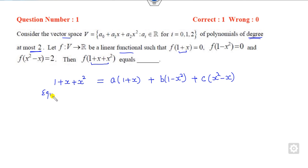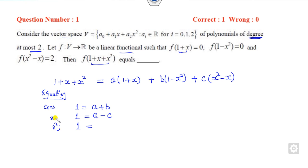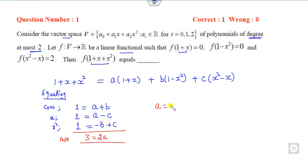You can equate the coefficients on both sides. The constant part gives a plus b. The coefficient of x gives a minus c. The coefficient of x squared gives minus b plus c equals 0. If you simply add all equations, b and c cancel out, giving a equals 3/2. Substituting back, b equals minus 1/2, and c equals 3/2.